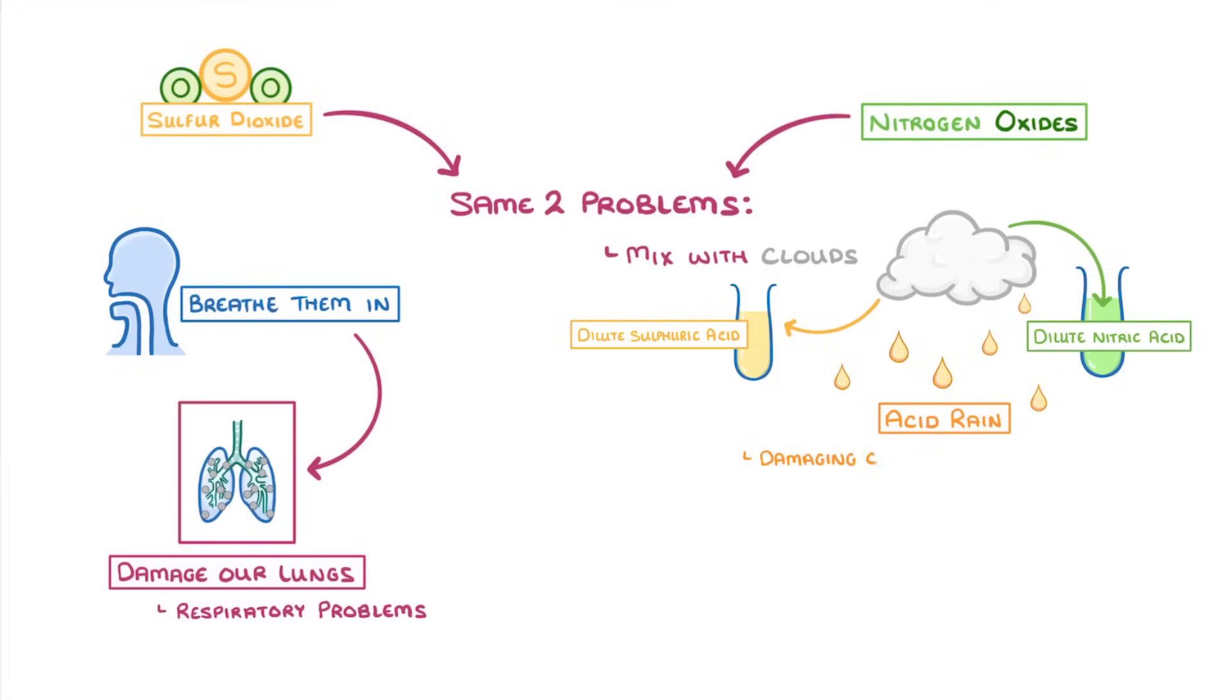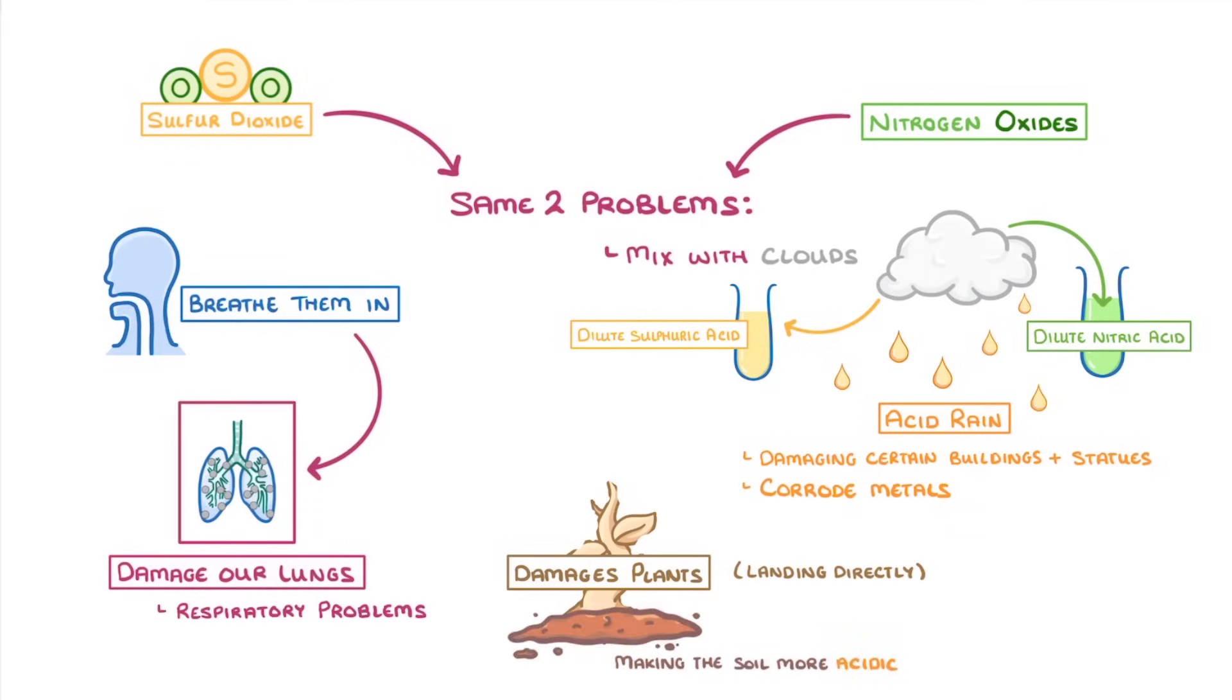As well as damaging certain buildings and statues, and being able to corrode metals, acid rain also damages plants, either by landing directly on the plants, or by making the soil more acidic, which can make it harder for the plants to grow.